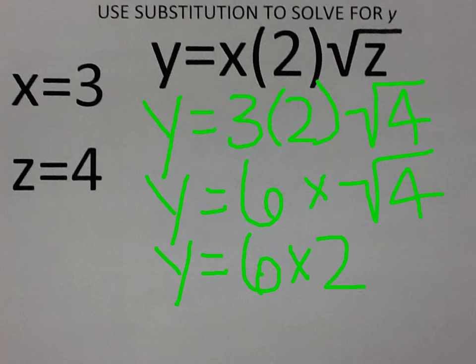Now we know that our answer, 6 times 2, is equal to 12. And you have just used substitution to solve for y.